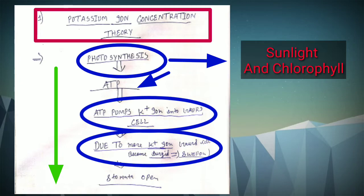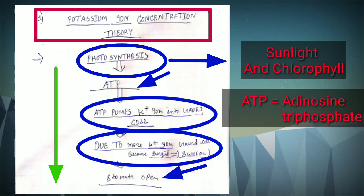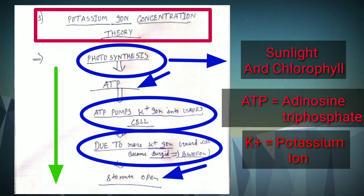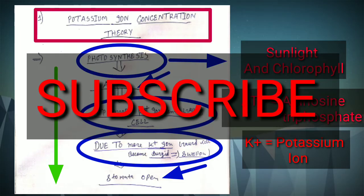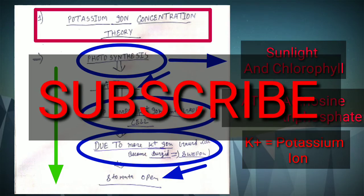Potassium ions move in the stomatal region and then stomata opens. Full form of ATP is adenosine triphosphate, K+ is potassium ion, and turgid means swollen. If you have earned some knowledge from this video then do subscribe to this channel. Thanks for watching.